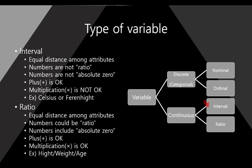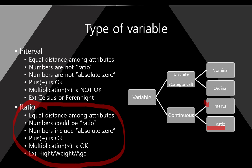Most numerical variables are ratio. Ratio variables here. Ratio variables has equal distance among attributes. And numbers could be ratio. And also, this variable includes absolute zero. So, the plus and multiplications, all things are okay. For example, height, weight, age are ratio variables.